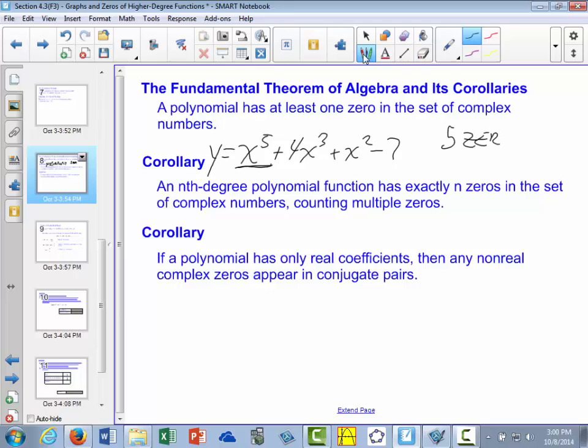Those zeros can be a combination of real zeros, complex zeros, and multiple zeros, so zeros that are duplicated when we factor the equation.